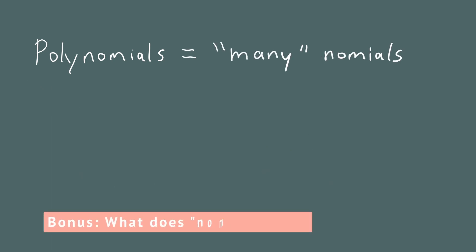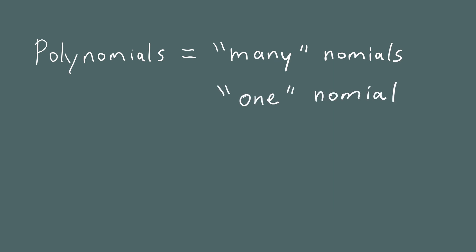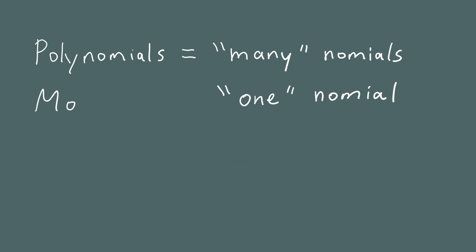If a polynomial is 'many-nomials,' we need to begin by understanding what we mean by a 'nomial.' What is one-nomial? The prefix for one is 'mono,' so one-nomial would be 'mononomial.' But because they overlap on the letters N-O, we combine them to get 'monomial.' So a polynomial is many monomials, and a single one of these is called a monomial. We'll start by defining what a monomial is and looking at some examples.